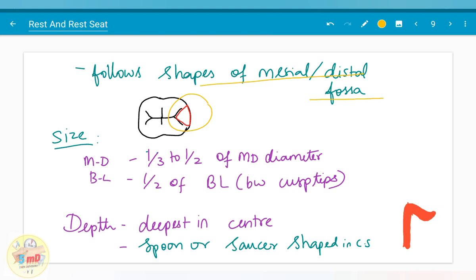The dimension is as follows. Mesiodistally, it forms one third to one half of the mesiodistal diameter. And buccolingually, it is half of the buccolingual diameter between the cusp tips. The depth is the deepest in the center and it is spoon or saucer shaped.